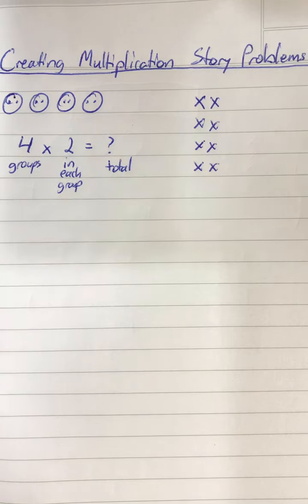That's right. They all show four equal groups with two in each group.